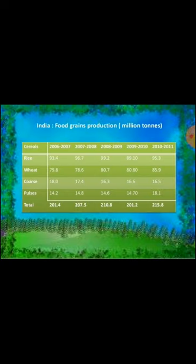In this chart we can understand the food grains production, which is in million tons. It is concentrated on rice, wheat, coarse grains and pulses, covering the period from 2006-2007 till 2010-2011.